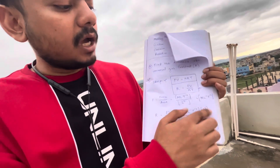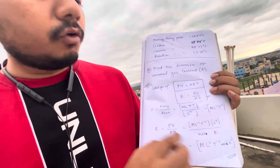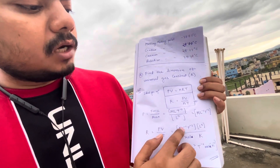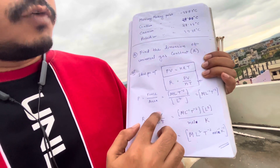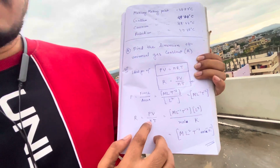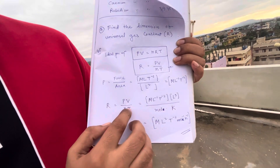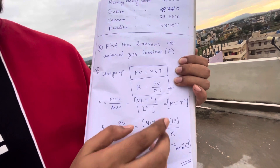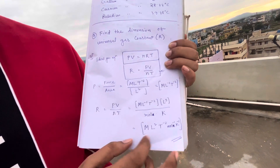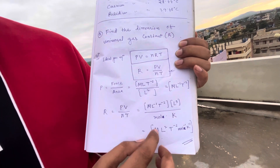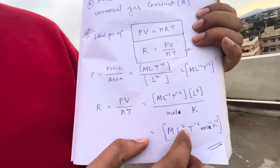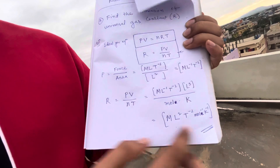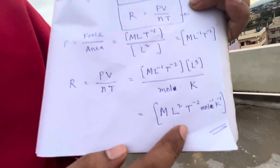Now with R = PV / nT, I am putting in all the dimensions to find the dimension of R. The dimension of pressure P is ML⁻¹T⁻², and volume V is L³. For n, the number of moles of gas, the dimension is mol, and T for temperature is kelvin — remember, in gas problems you must always use temperature in kelvin only. Combining: L³ × L⁻¹ gives L², so the dimension of R is ML²T⁻² mol⁻¹ K⁻¹.